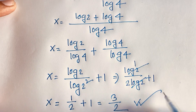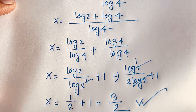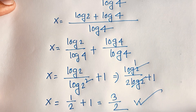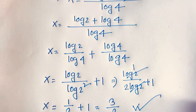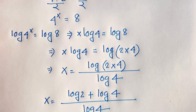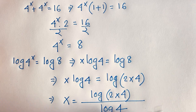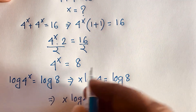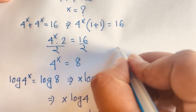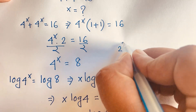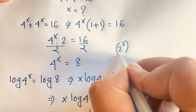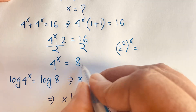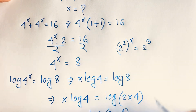So our final answer is x equals 3/2. We can verify: 4 to the power x equals 8. For the second method, 4 to the power x equals 2 to the power 2 times x, and 8 equals 2 to the power 3.